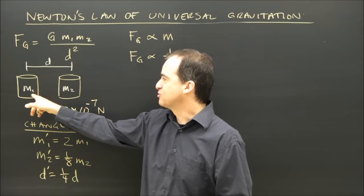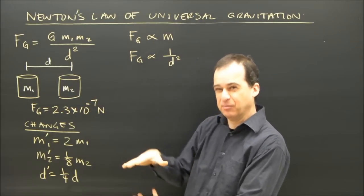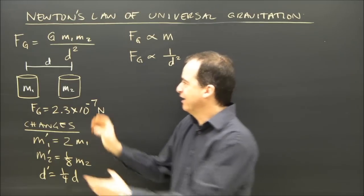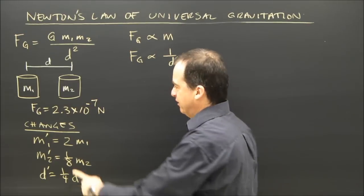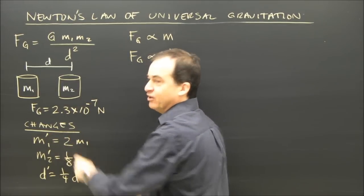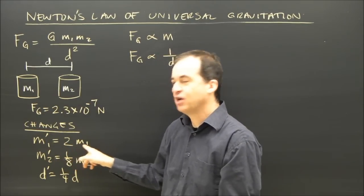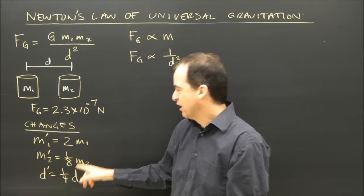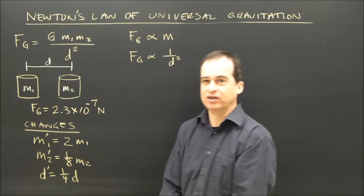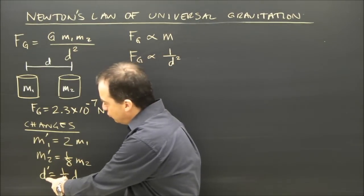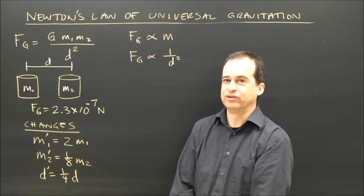For instance, I make the first mass twice as big and make the second one one-eighth as big — so it's smaller. And I take the two of them and move them until the distance is one-quarter of what it was. We use prime here to indicate the new condition. So the new mass one is two times the old mass, m2 prime is one-eighth of what it was, and d prime is one-quarter of the old distance.